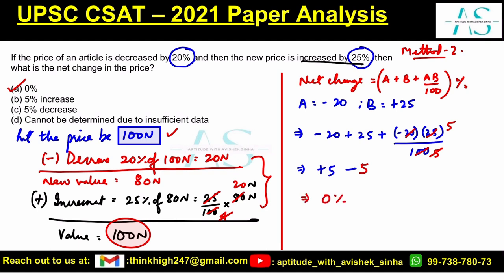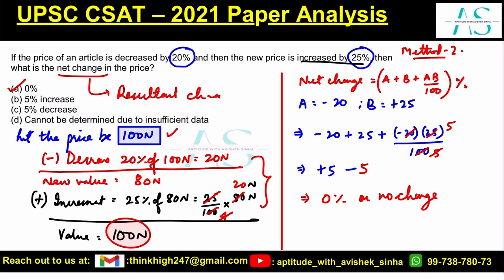This is an important concept in net change calculations. In most percentage change questions asking for the final or resultant change, you can use the net change formula: a + b + ab/100. I hope this is clear — see you all in the next video.